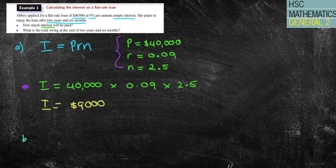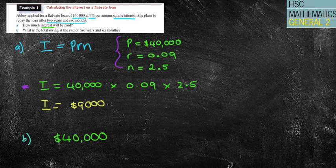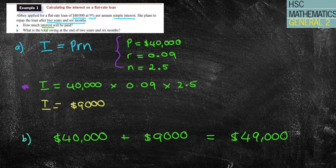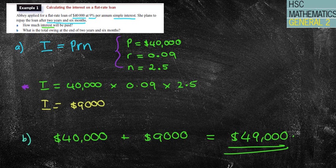So then we come to the second question. What is the total owing at the end of the two years and six months? Well, I borrowed that initial $40,000. That's my total amount that I borrowed. I'm being charged an extra $9,000 for being able to borrow that amount. Therefore, I owe $49,000. So a pretty straightforward question, but making sure that the first question they asked for the interest, the second question they asked for the total amount.